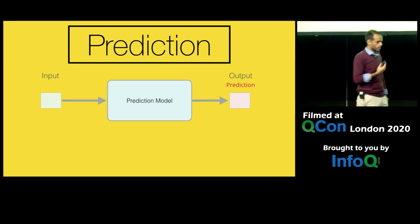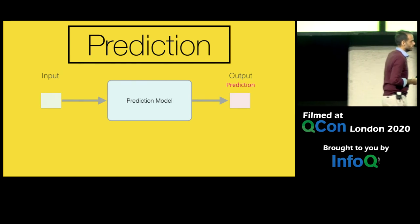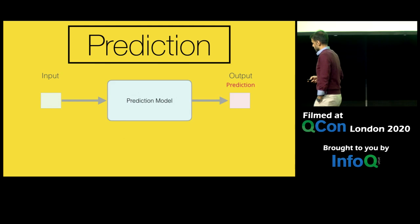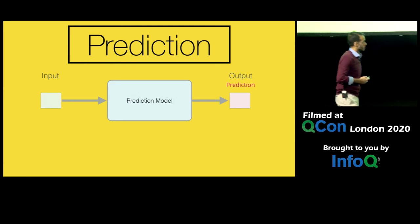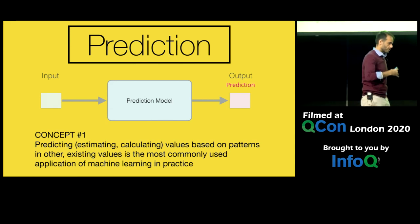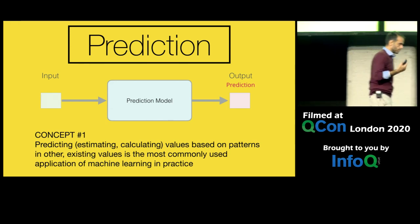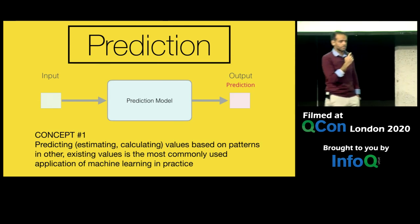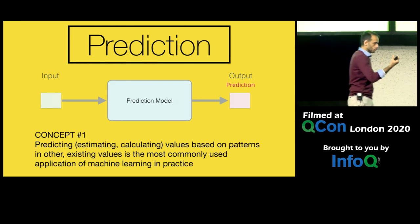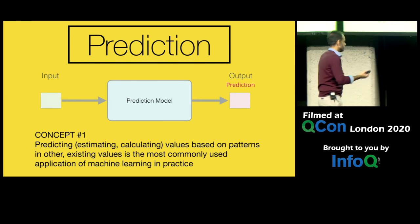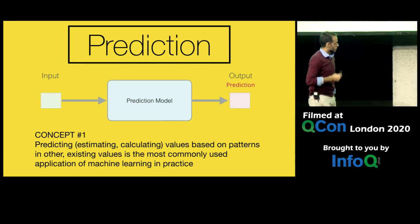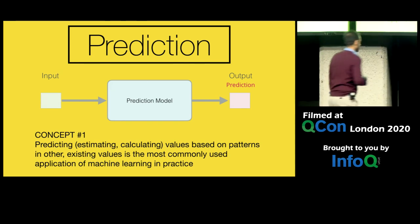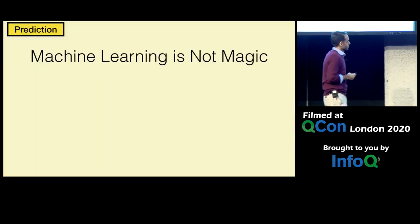We can think of prediction as a model that takes in a numeric input and spits out a prediction — another number. This is our first concept. We're going to run through about ten concepts. Prediction — I also call it estimating and calculating — because this kind of prediction does not always have to be about things in the future. Predicting values based on patterns in existing values is the most commonly used application of machine learning in practice.